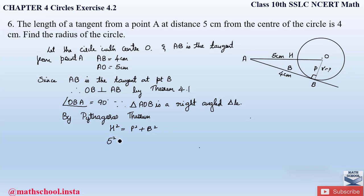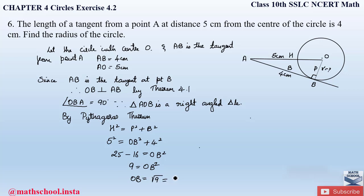Substituting: 5² = OB² + 4². So 25 = OB² + 16. Therefore OB² = 25 − 16 = 9. So OB = √9 = 3 centimeters. Therefore the radius of the circle is 3 centimeters. This is how we solve this question — you simply apply Theorem 4.1 and the Pythagoras theorem to find the radius of the circle.